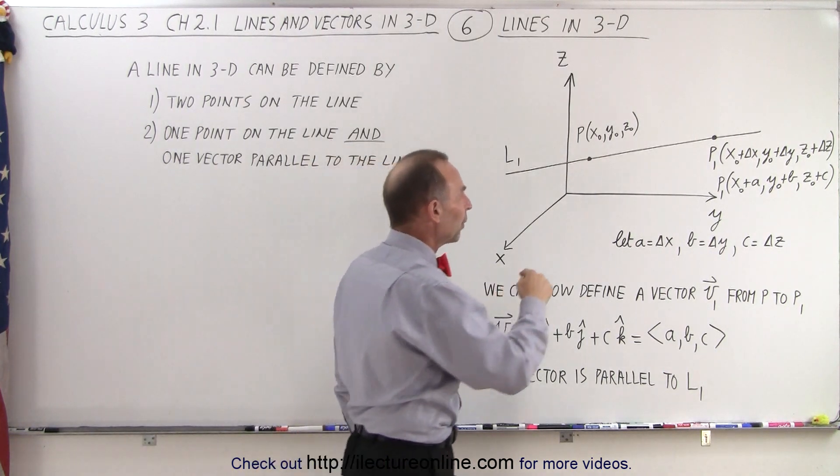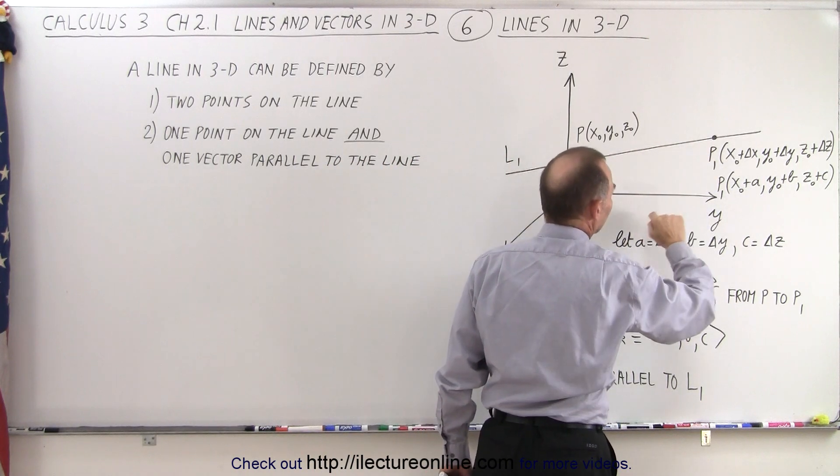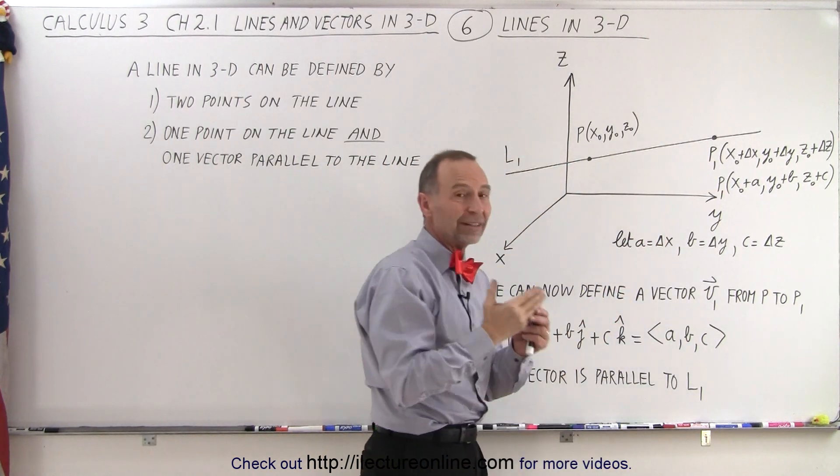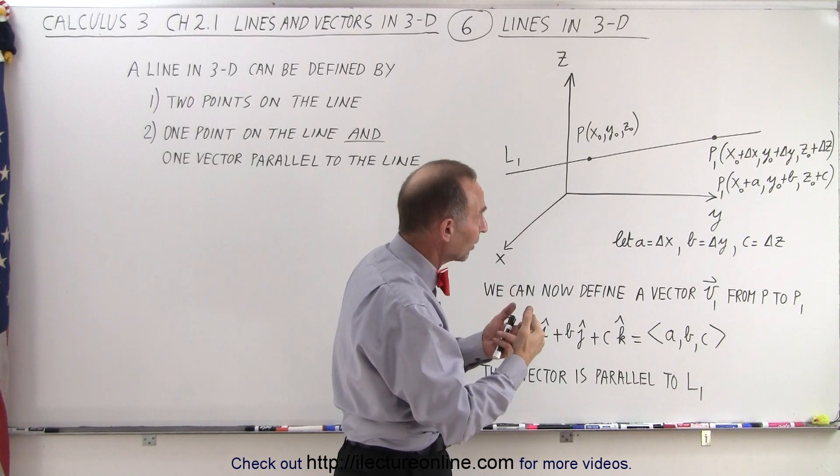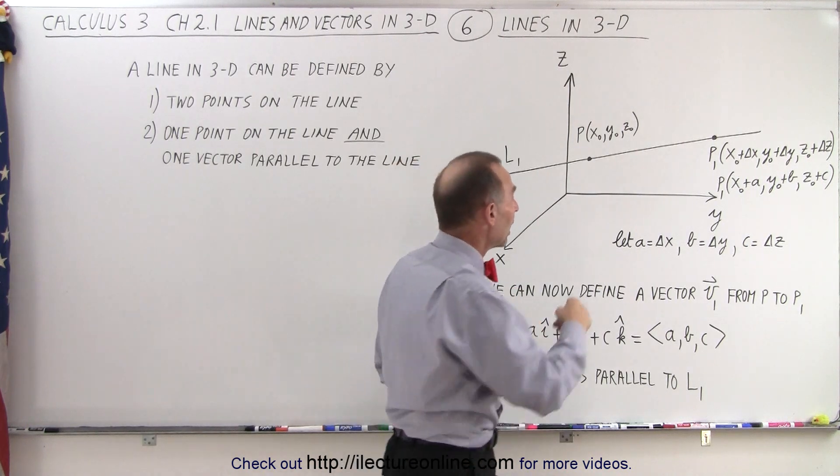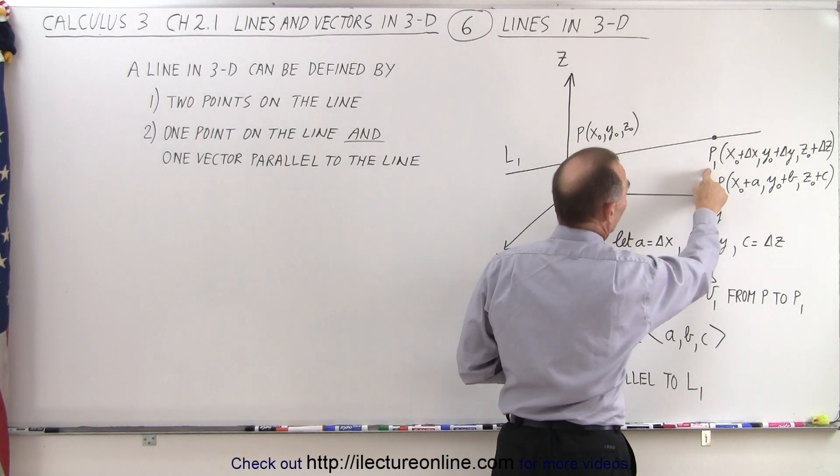If we now pick another point on the line, further up the line, so that we know that we've moved a certain distance delta x, a certain distance delta y, and a certain distance delta z, we now come to a new point, so let's call that point 1.